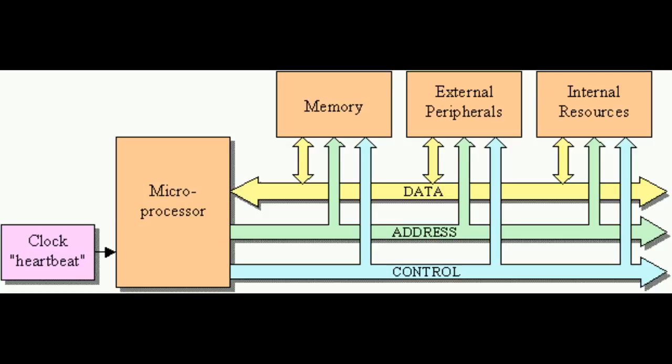Then there are external peripherals that are connected to the clock, and then there are internal resources. Internal resources can be your scratch pads, the general purpose registers or any kind of things. These are the few main blocks of a microprocessor.